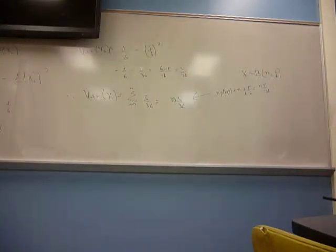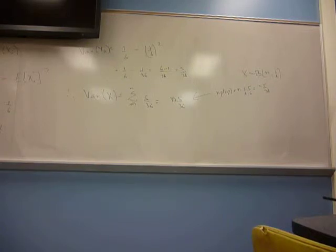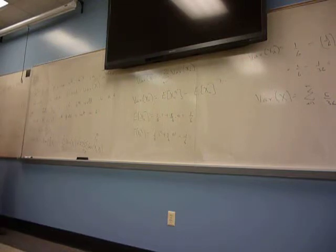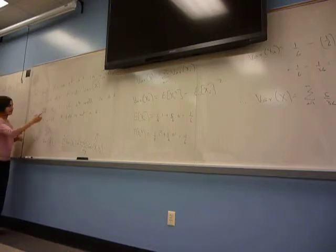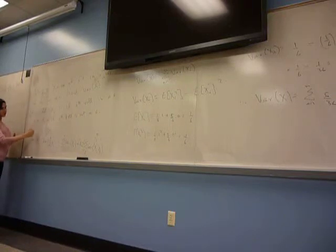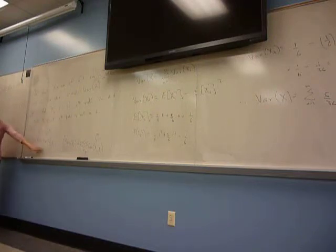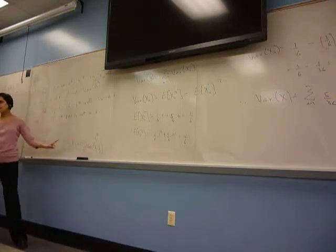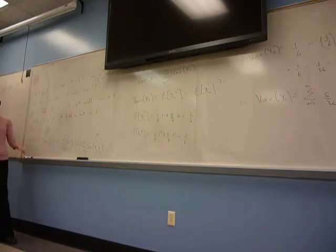Even if you didn't know formulas for the binomial distribution, you could break down a problem like this into something very simple — write it as a sum of indicator functions, which equal 1 when a certain event happens and 0 otherwise. This is going to be a very useful trick. In any situation where you can split your random variable into a sum of indicator random variables, you can use simple formulas like this.